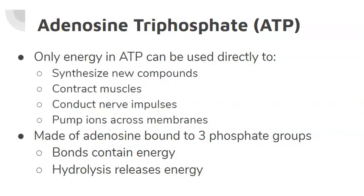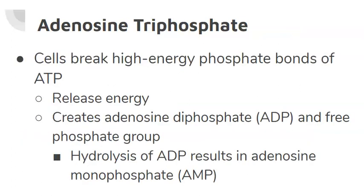Only the energy found in ATP can be used directly by cells to synthesize new compounds, which is an anabolic pathway, to contract muscles, conduct nerve impulses, and pump ions across membranes. A single molecule of ATP consists of the organic compound adenosine bound to three phosphate groups. These bonds are considered high-energy phosphate bonds because of the energy stored in each bond. The hydrolysis of these bonds releases the energy stored. Once the cells break a high-energy phosphate bond, adenosine diphosphate, known as ADP, is created in addition to a free phosphate group. If hydrolysis occurs again on the high-energy phosphate bond, adenosine monophosphate, AMP, is formed.